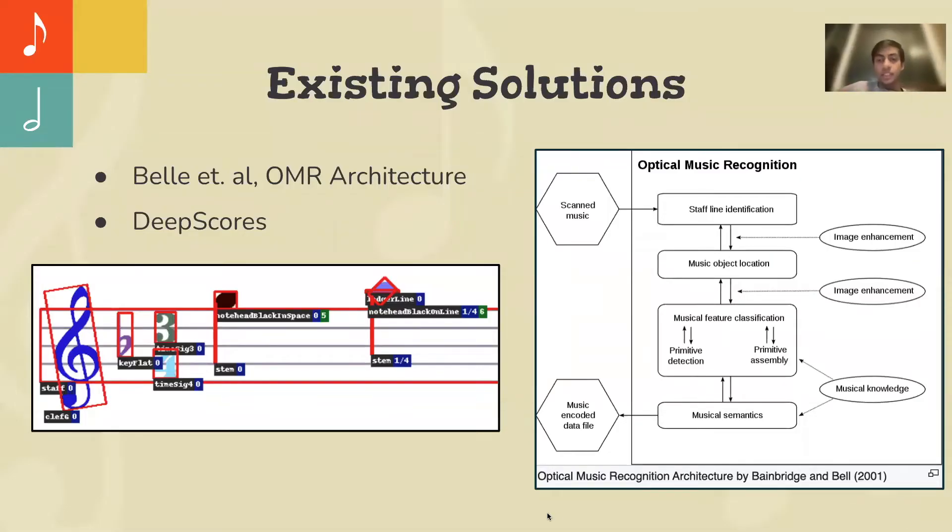So there's a few existing solutions for this problem. In 2001, Bainbridge and Bell came up with the optical music recognition, which described stages for that. And there's also Deep Scores, which has a semantic segmentation model for different symbols in the score. But again, these solutions don't have 100% accuracy, and we decided to improve upon that and implement our own.